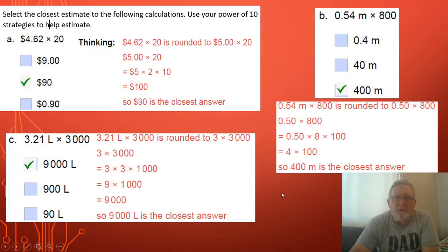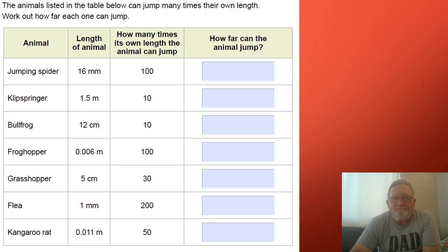Here's another way that we can look at it. We've got various animals that are all known for their ability to jump. So we've got the length of the animal and then a rough idea of how far that animal can jump in terms of its own body length. Work through each of these. Don't forget to write your measurement in as well.